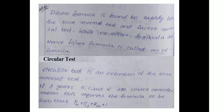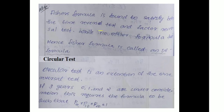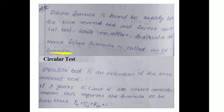Therefore, important note: Fisher's formula is found to satisfy both the time reversal and the factor reversal test, while no other formula does. Hence, Fisher's formula is called an ideal index number. It is ideal because both the time reversal test and factor reversal test are satisfied.